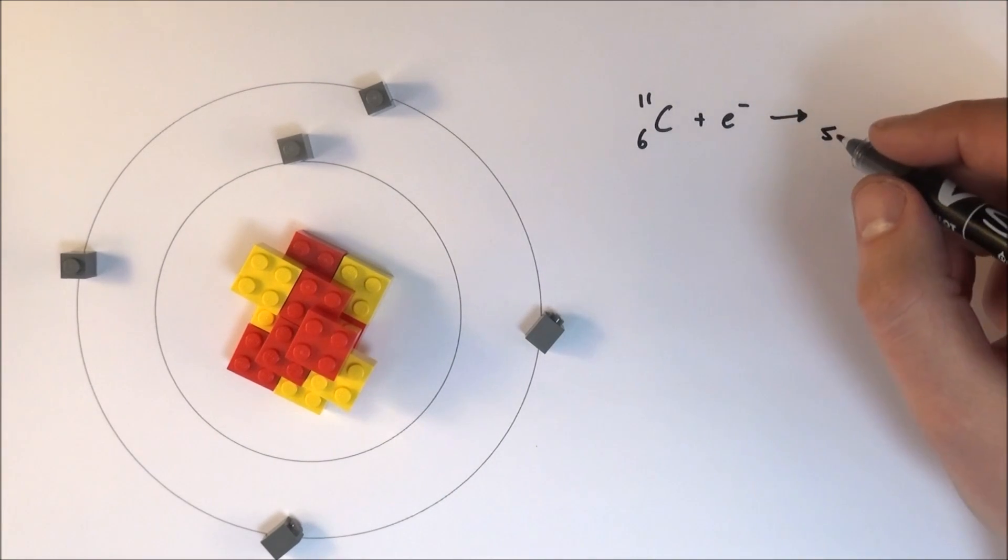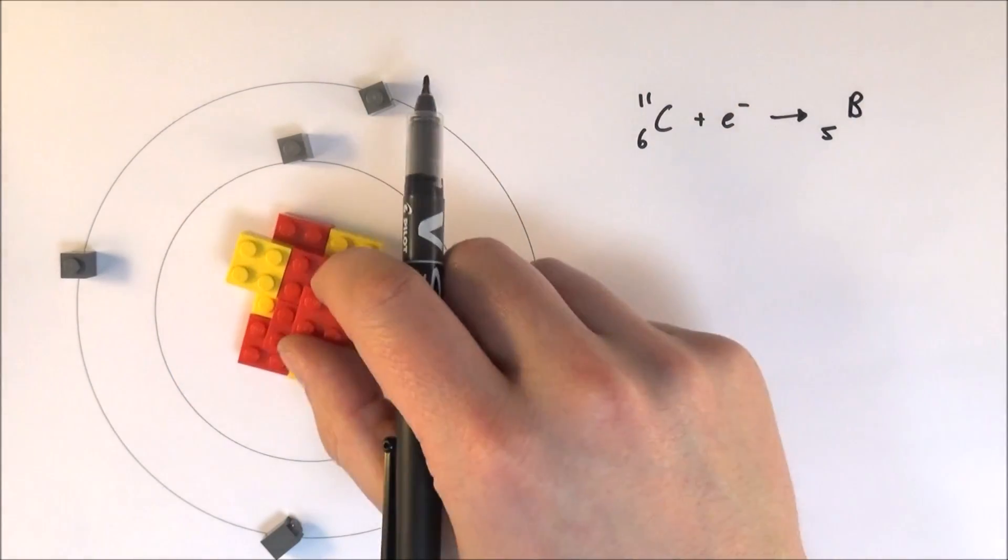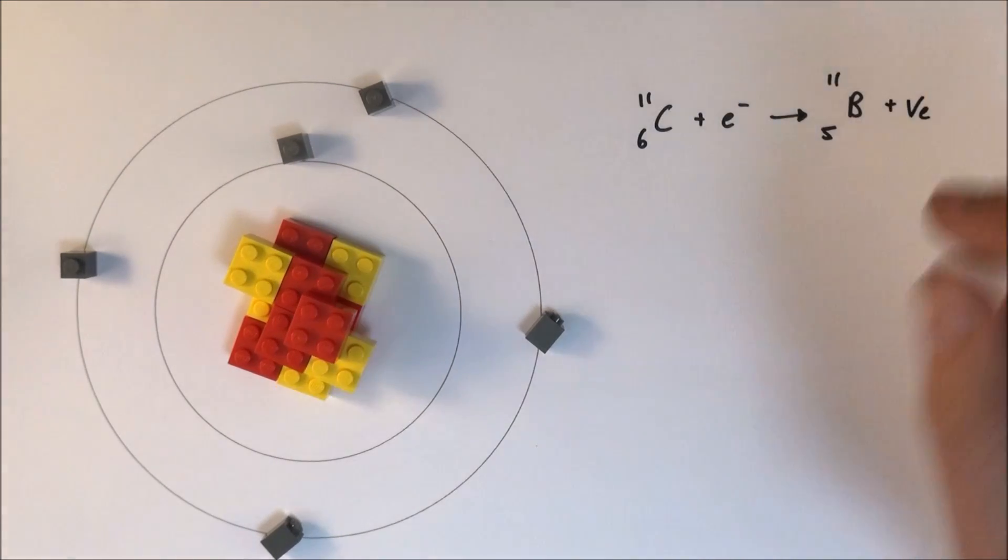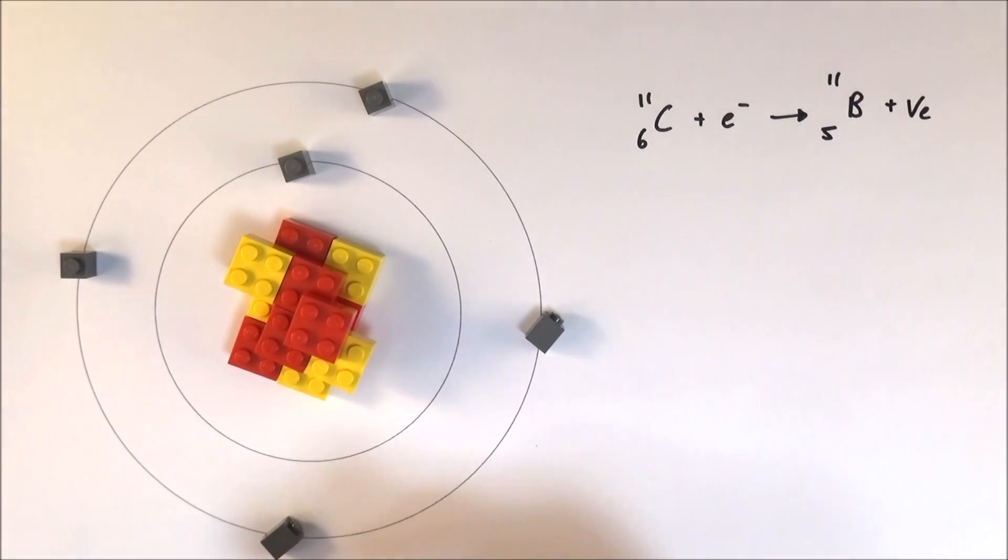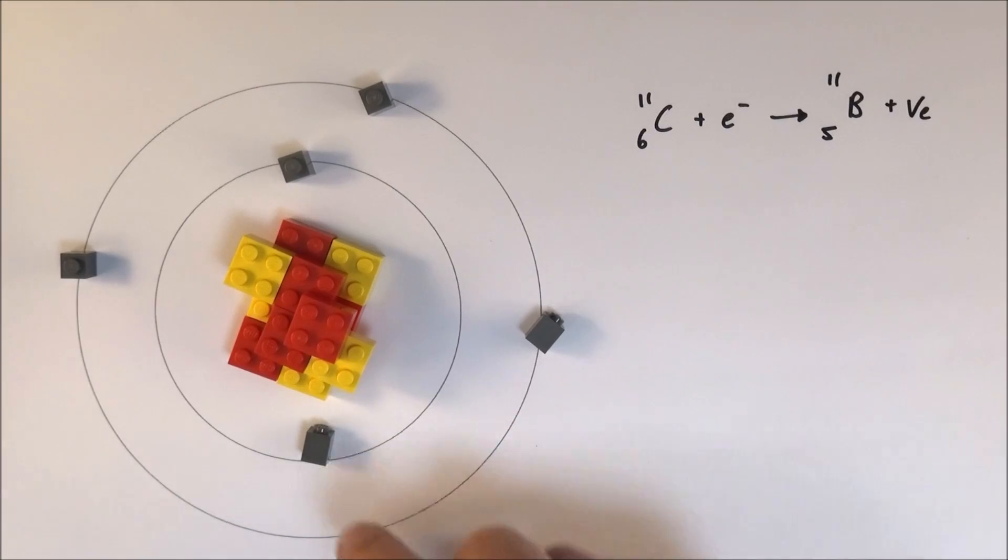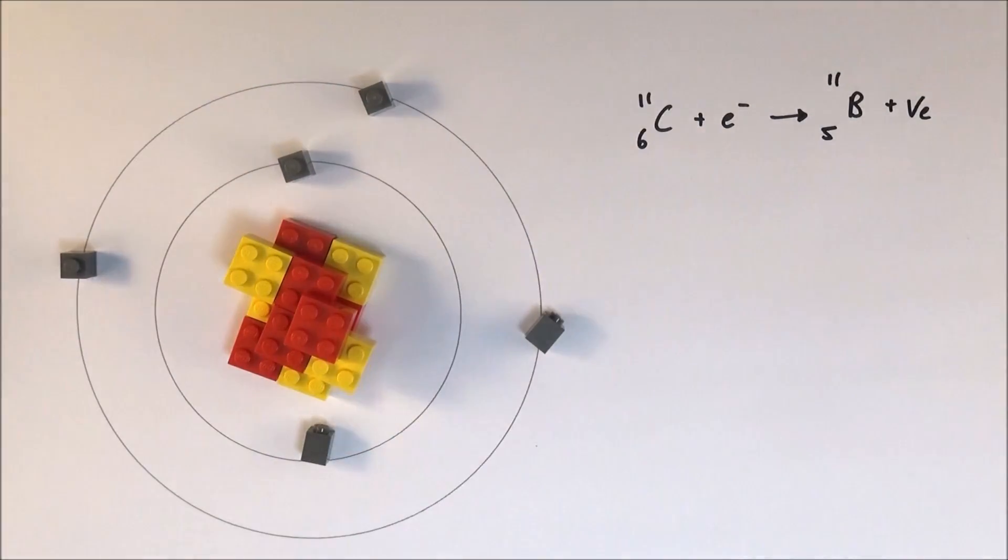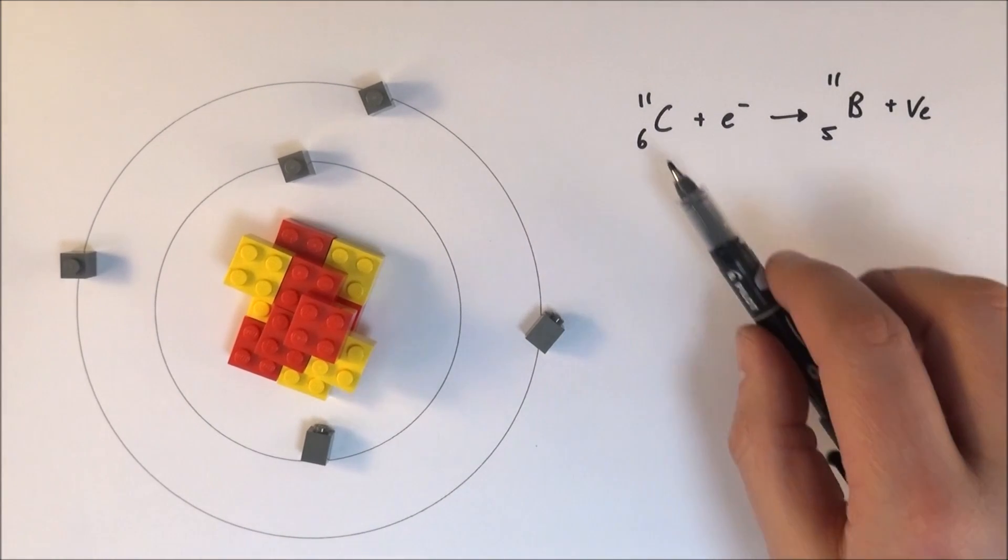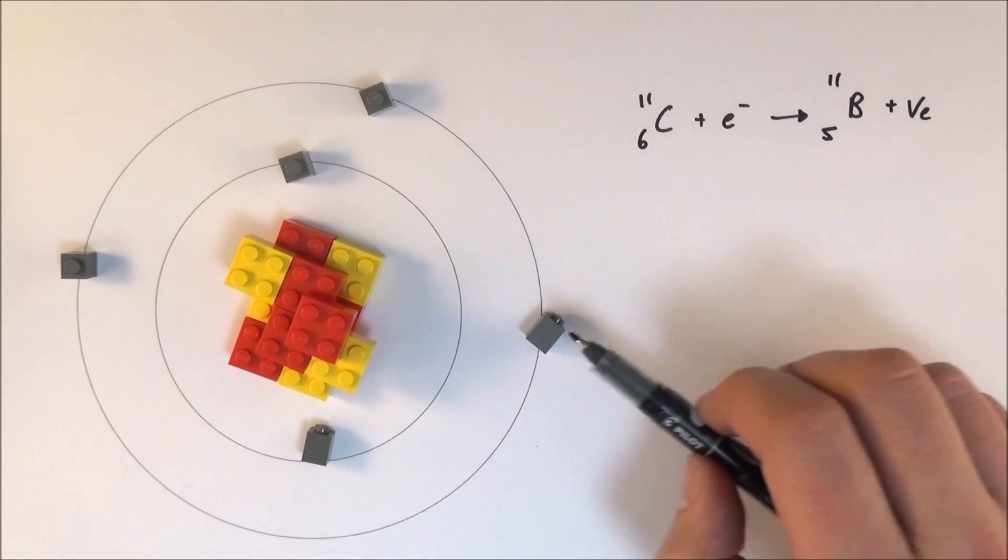If we look at our periodic table, we find that this is boron. There are still 11 nucleons there, we've still got the same amount, and also an electron neutrino is given off. And what happens then is at some time one of these electrons in the outer shell is going to move back down, might give out a packet of energy as it does so, and then we again have our full inner shell of two and then we have our outer shell of three. So that's K-capture, and it's just another way that an element can change from one form to another to become more stable and give out some kind of particles.